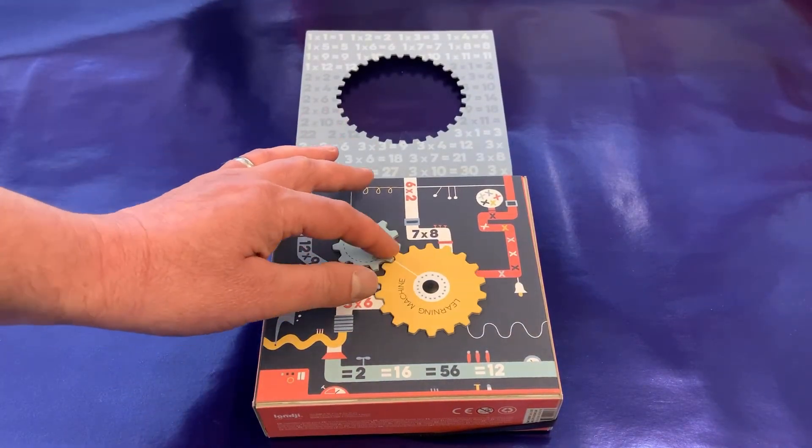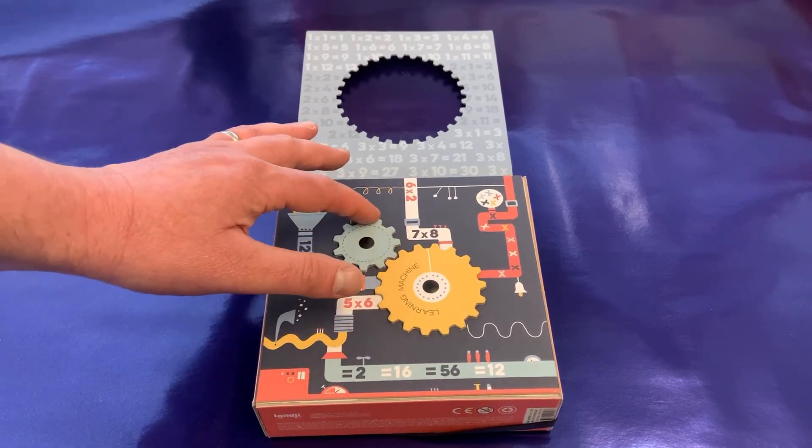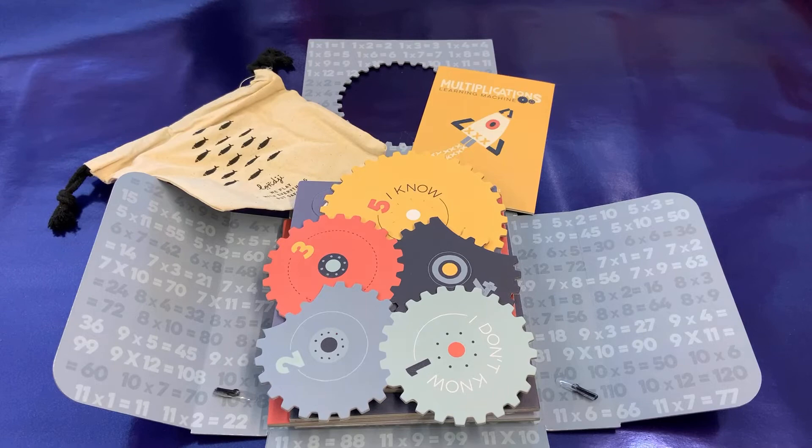This pack is not just about learning your times tables, it's about understanding why and how they work. Open again, you'll find a reusable bag to store all the pieces, five cogs which are the key to learning methodology, and an instruction book.